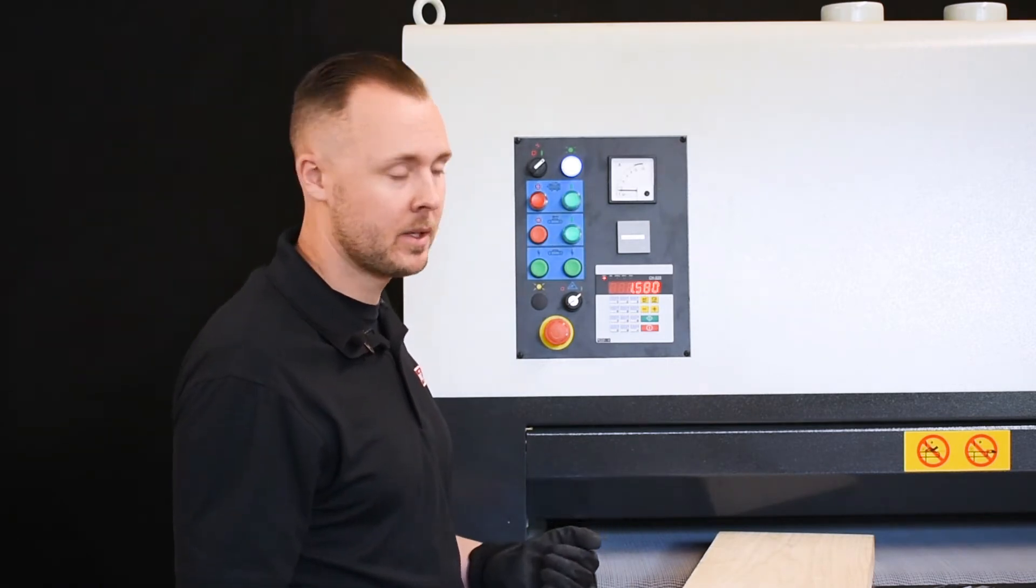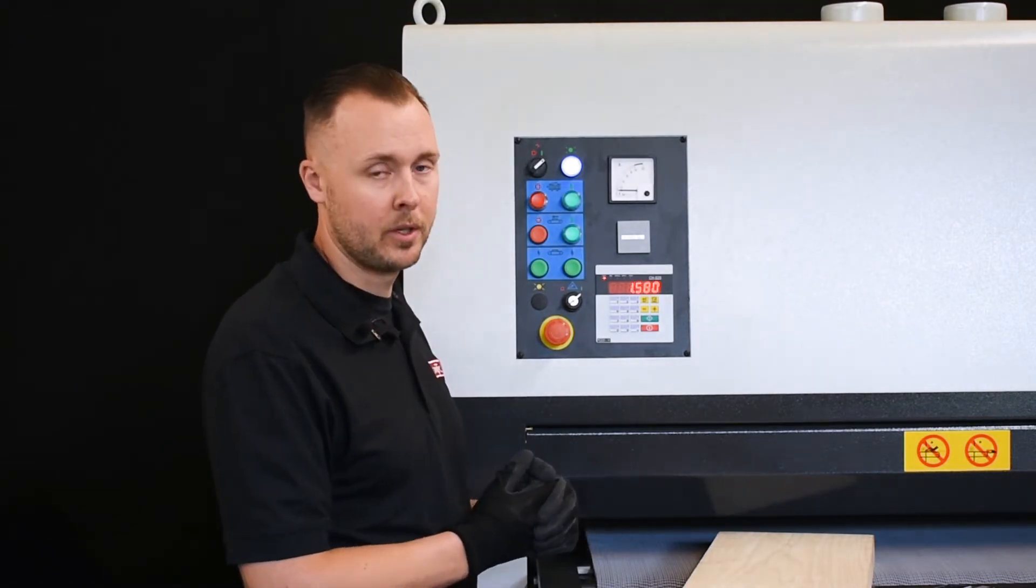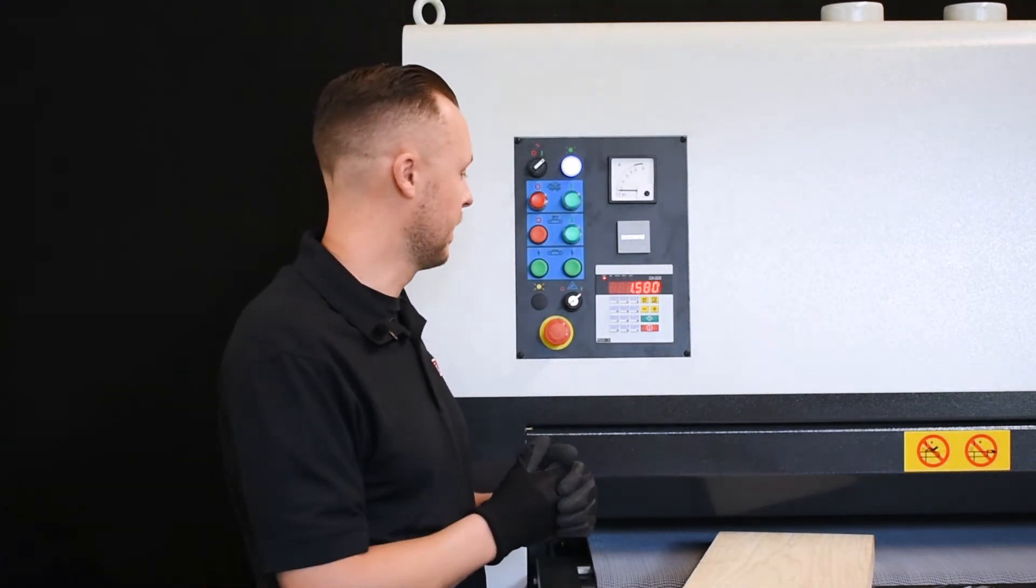At this point you're going to run a test piece. So you're going to run your material through and measure it again. If your measurement is off you can recalibrate the machine.